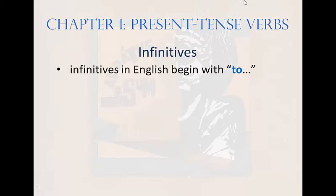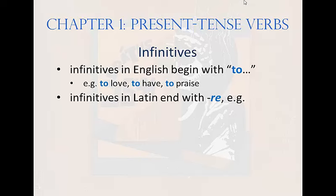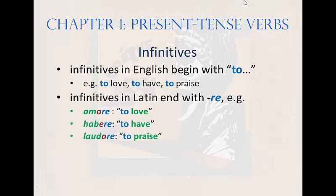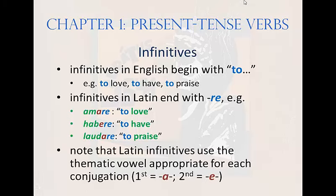Infinitives. Infinitives in English begin with 'to,' as in 'to love,' 'to have,' 'to praise.' Infinitives in Latin end with 're' — for example, 'amare' meaning to love, 'habere' meaning to have, 'laudare' meaning to praise. Note that Latin infinitives use the thematic vowel appropriate for each conjugation: A in first conjugation, E in second conjugation.